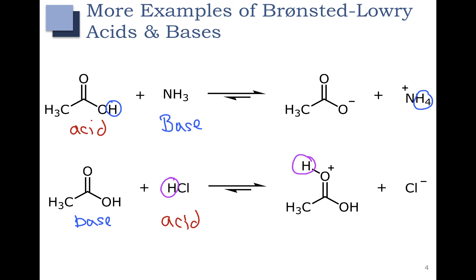Some things can react as both acids or bases depending on the strength of the base or the strength of the acid. That's what we saw here with the carboxylic acid — it can be an acid when there's a stronger base present, and it can be a base when there's a stronger acid present. Water is another thing that can be an acid or a base depending on what's in the solution.